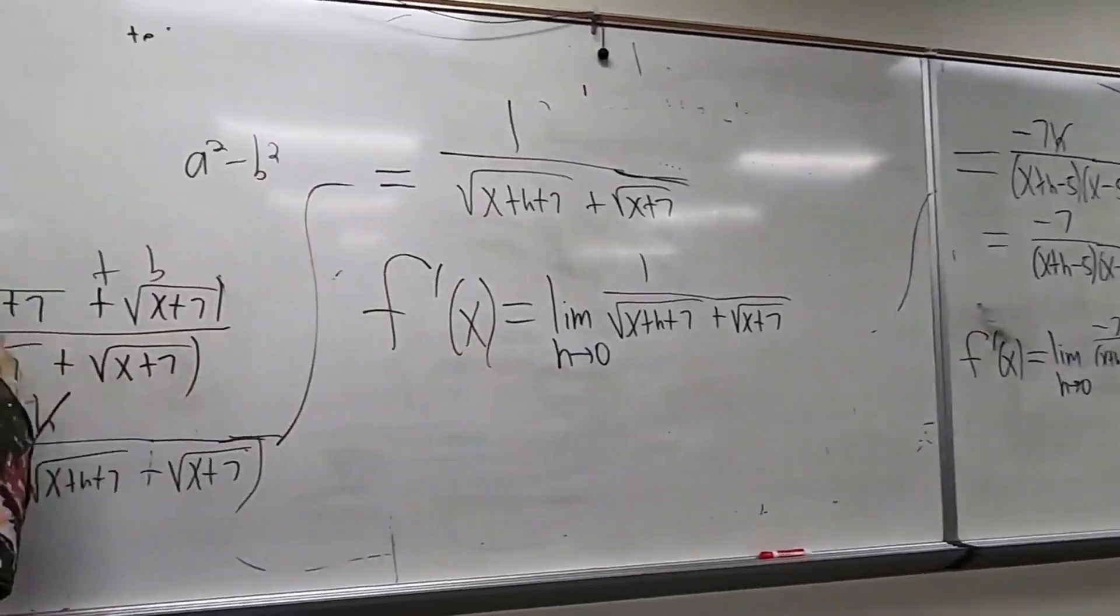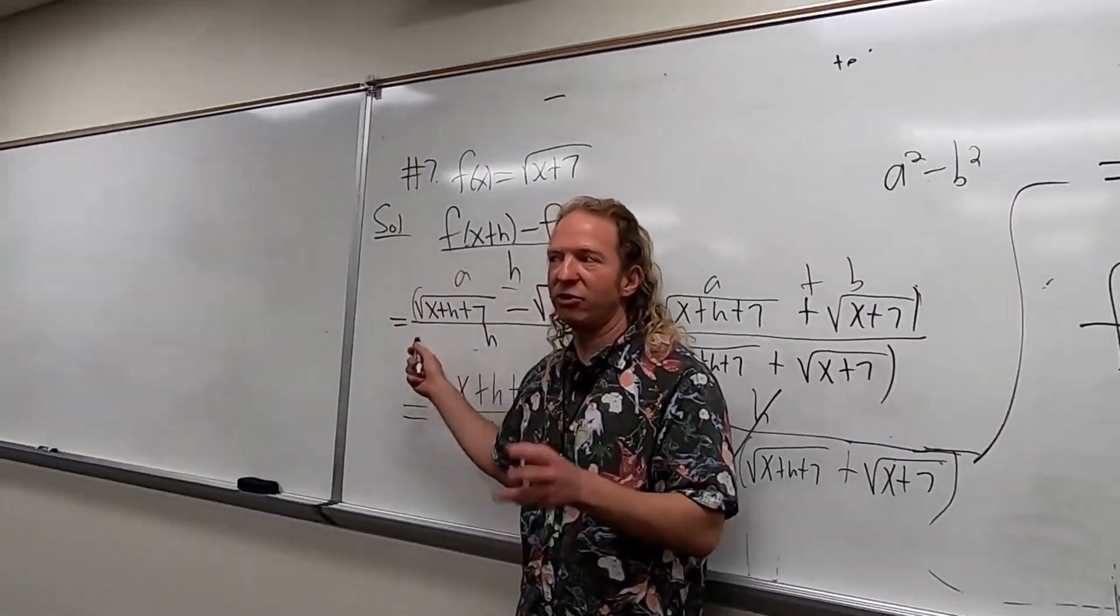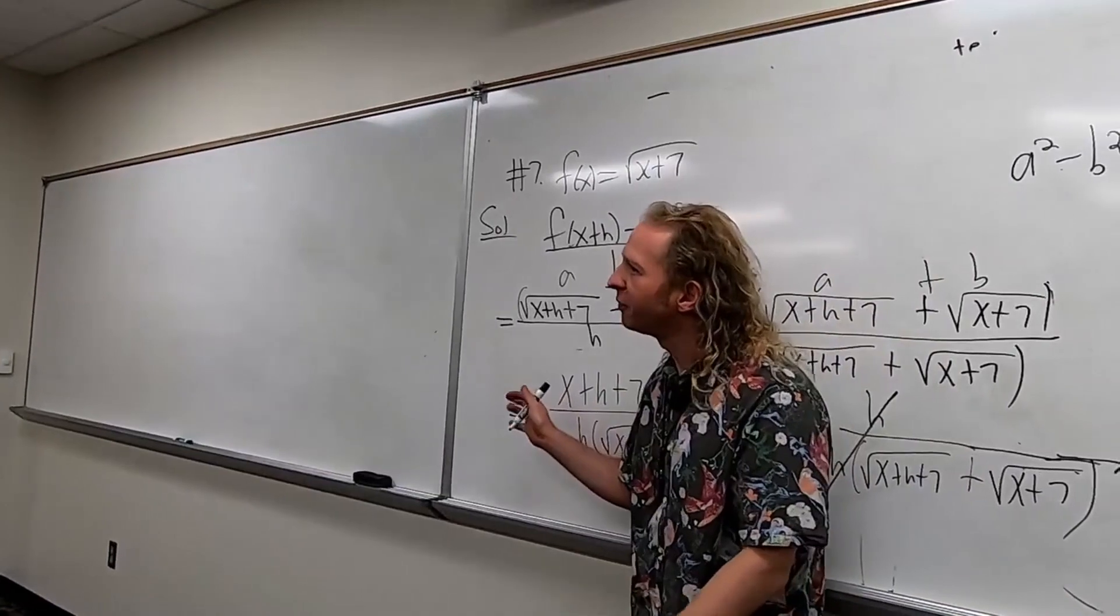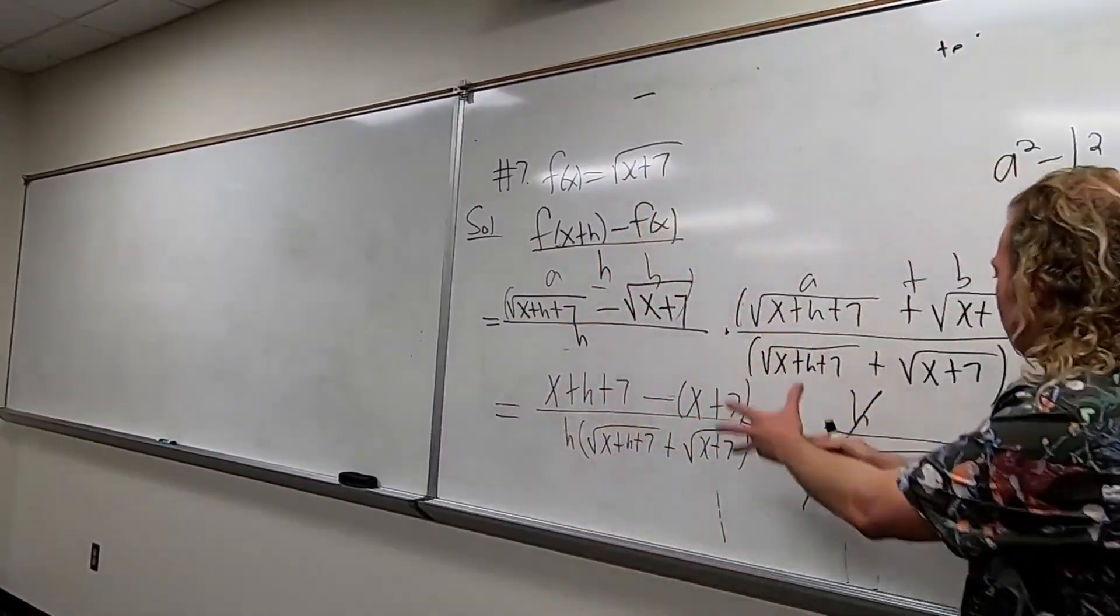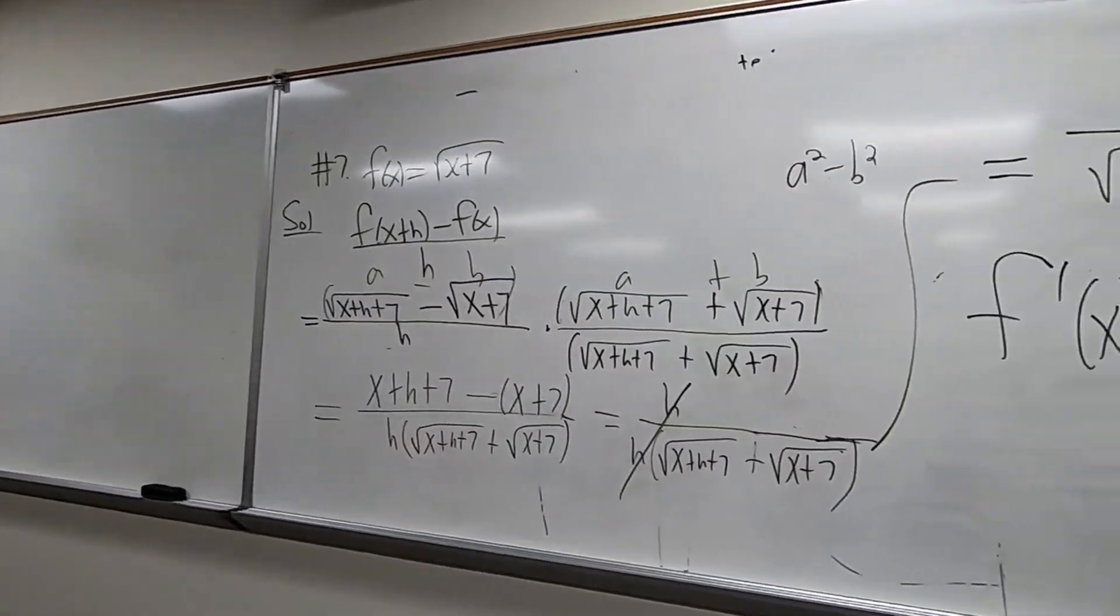The most common mistake on this question is people mess up with the limits. They'll write the limit at the beginning, then stop writing it. If you do that, I have to take off points. Once you write the limit, you have to write it every time. The way we're doing it is to not write the limit until the very end.